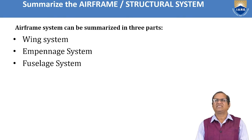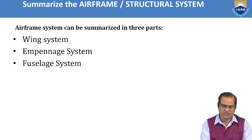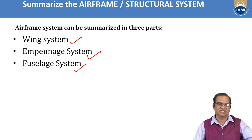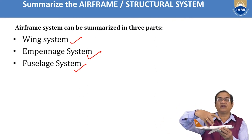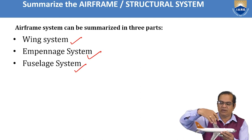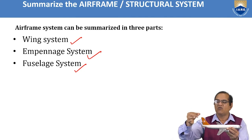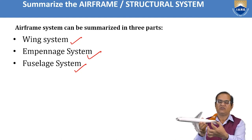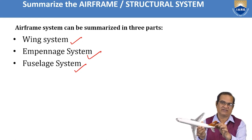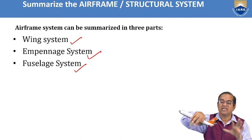The first question is: summarize the airframe and structural system. We can divide airframe systems into three main parts: the wing system, the empennage system, and the fuselage system. The wing is the main component which generates the lift of the aircraft. The empennage includes the vertical stabilizer, horizontal stabilizer, rudder, and elevator — this entire tail section is called the empennage system.